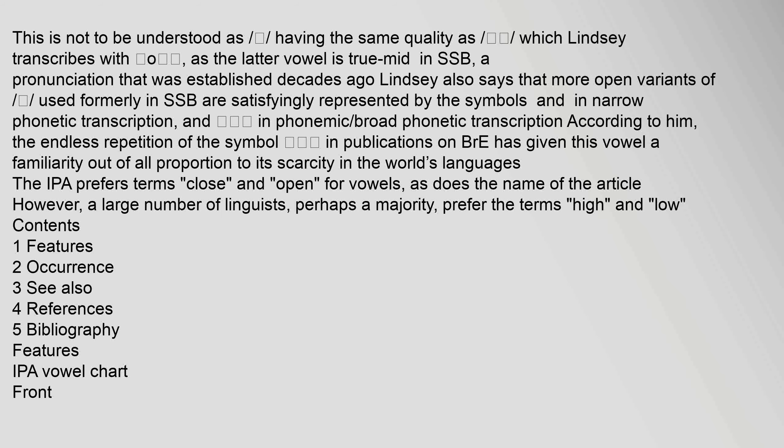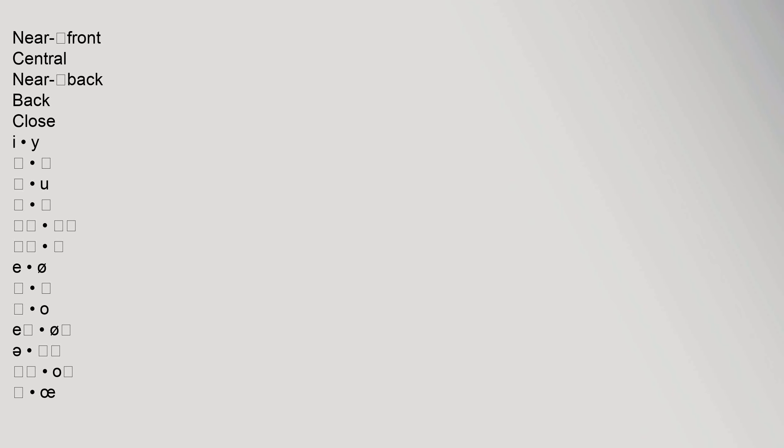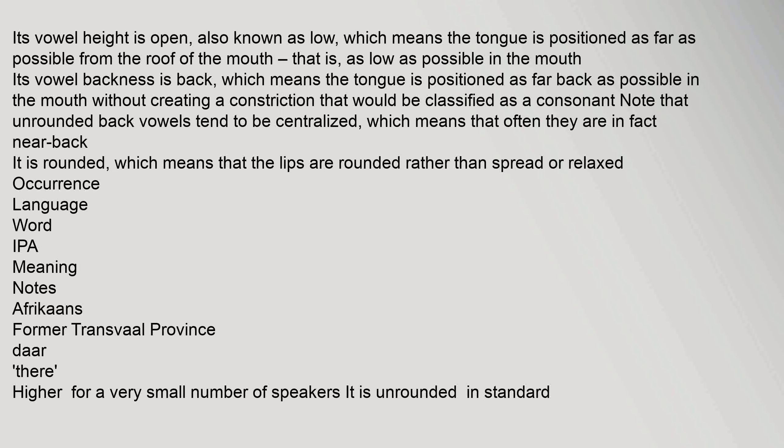The IPA prefers the terms 'close' and 'open' for vowels, as does the name of this article. However, a large number of linguists, perhaps a majority, prefer the terms 'high' and 'low.' Its vowel height is open, also known as low, which means the tongue is positioned as far as possible from the roof of the mouth — that is, as low as possible in the mouth. Its vowel backness is back, meaning the tongue is positioned as far back as possible without creating a constriction classified as a consonant. Note that unrounded back vowels tend to be centralized, meaning they are often in fact near back. This vowel is rounded, which means the lips are rounded rather than spread or relaxed.